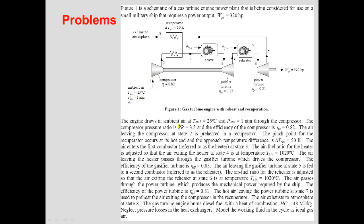The compressor has an isentropic efficiency of 0.82. The air is preheated in the recuperator/regenerator, and the pinch point for the regenerator is 50 degrees on the warm side and hot side — meaning that temperature difference is 50 degrees. The air enters the heater and reheater, and the temperature at the exit of both the heater and reheater is 1020 degrees Celsius.